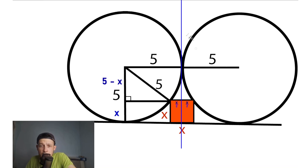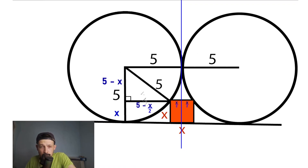The next really tricky moment: we divide our whole shape into two equal parts. Because this side equals x, then this part of the top side equals x over 2, and this side also equals x over 2. We just divide both sides into two equal parts. This radius equals 5, this small part equals x over 2, and it implies that this line equals 5 minus x over 2.